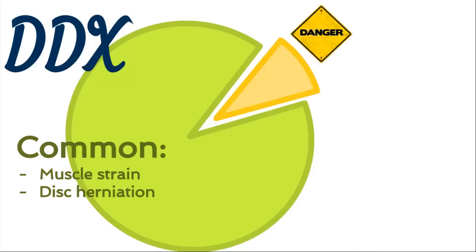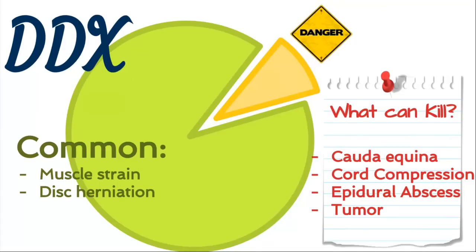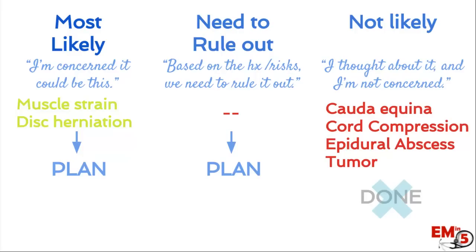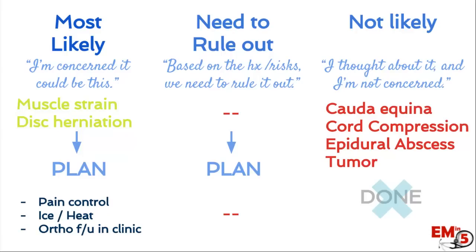On our differential, we include muscle strain and disc herniation. On the 'what can kill' list for low back pain, we always think about cauda equina, cord compression, epidural abscess, and tumor. Sorting into three columns: most likely is muscle strain or disc herniation. For need to rule out, I actually don't think we need to rule anything out in this patient as long as we did a good history and physical. The not as likely category gets all the other diagnoses. We don't need to do any further workup for the rule out or not as likely categories, and we've addressed everything on the 'what can kill' list.